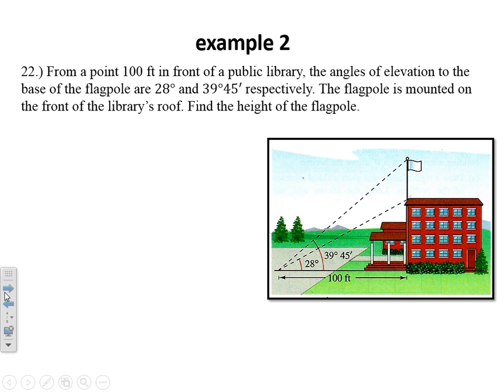Example two, from a point 100 feet in front of a public library, the angles of elevation to the base of the flagpole are 28 degrees and 39 degrees 45 minutes, respectively. The flagpole is mounted on the front of the library's roof. We need to find the height of that flagpole. The diagram has broken it down into two right triangles. So this first one right here, I'm going to call the height of that one HL for the height of the library. We know that has a base of 100 feet, and the angle of elevation is 28 degrees.